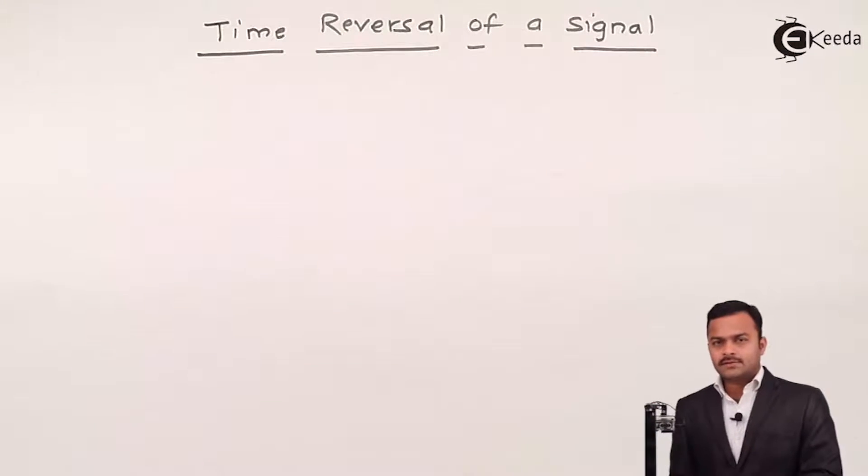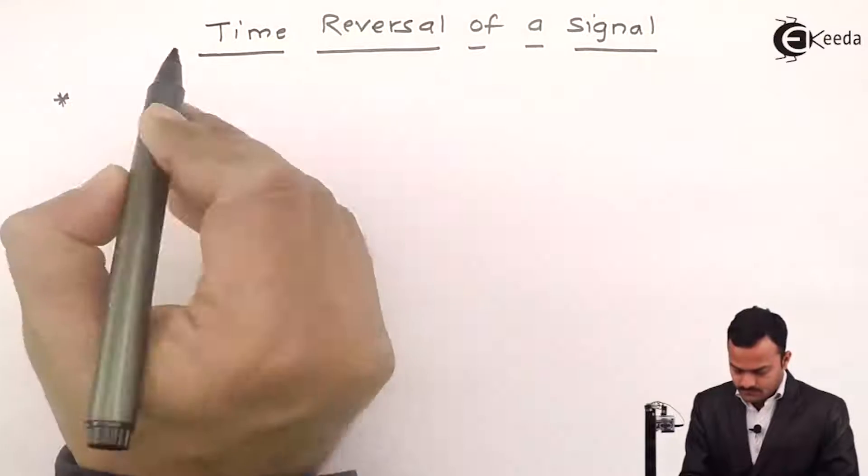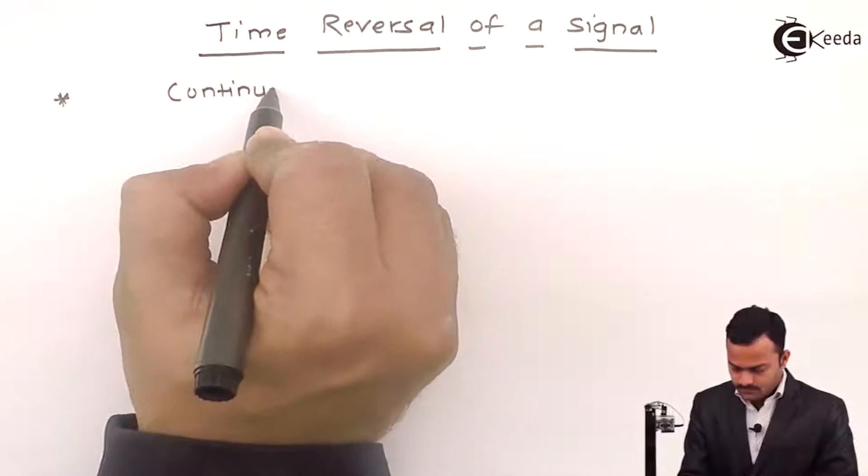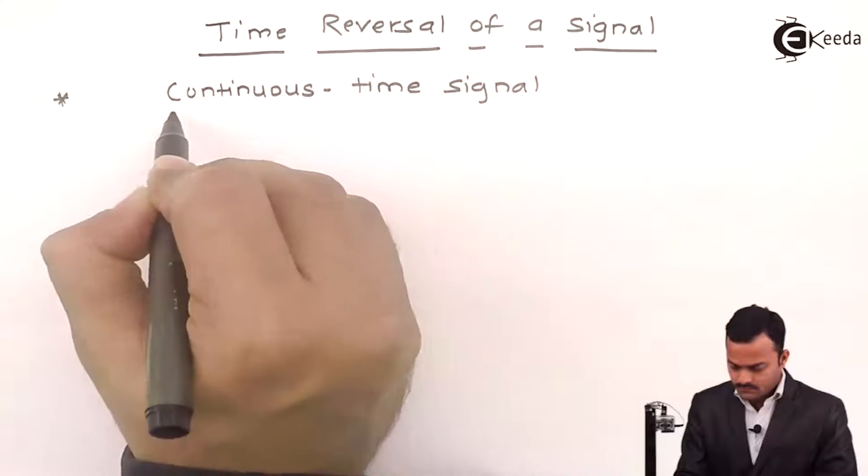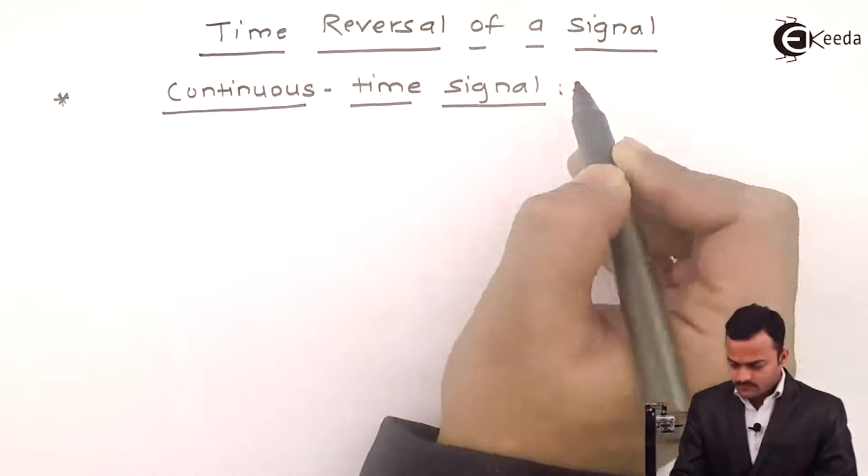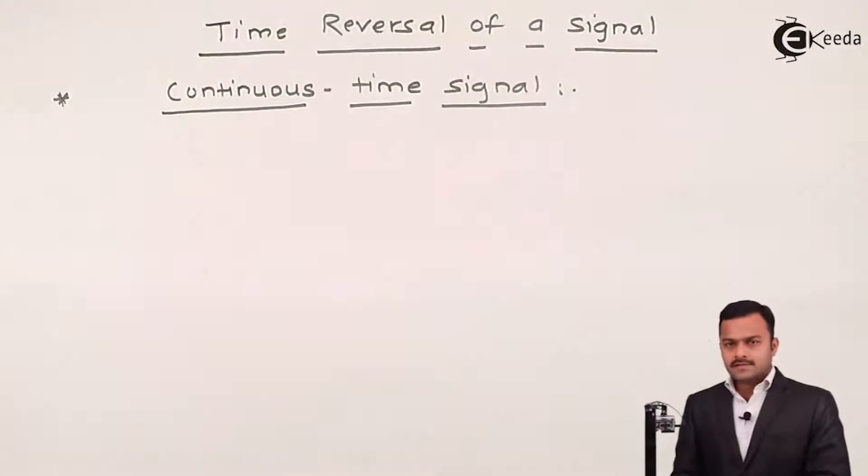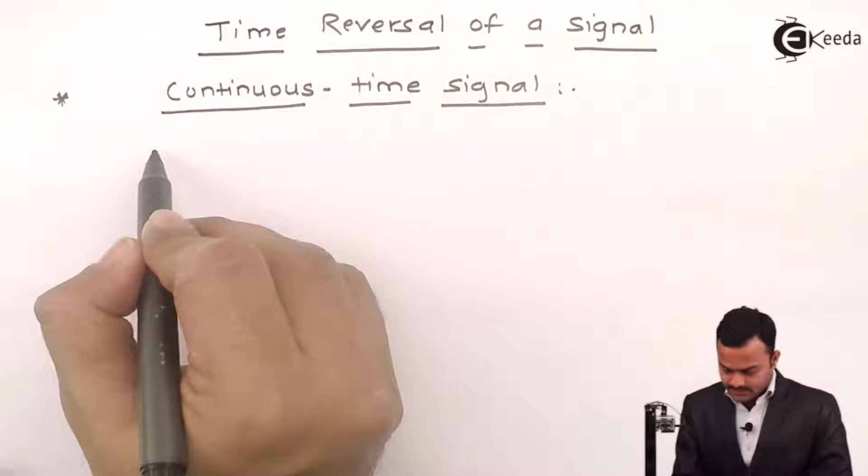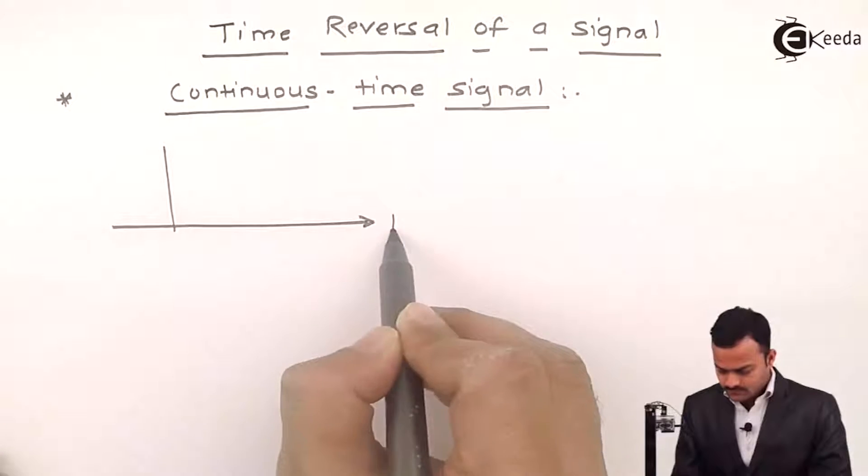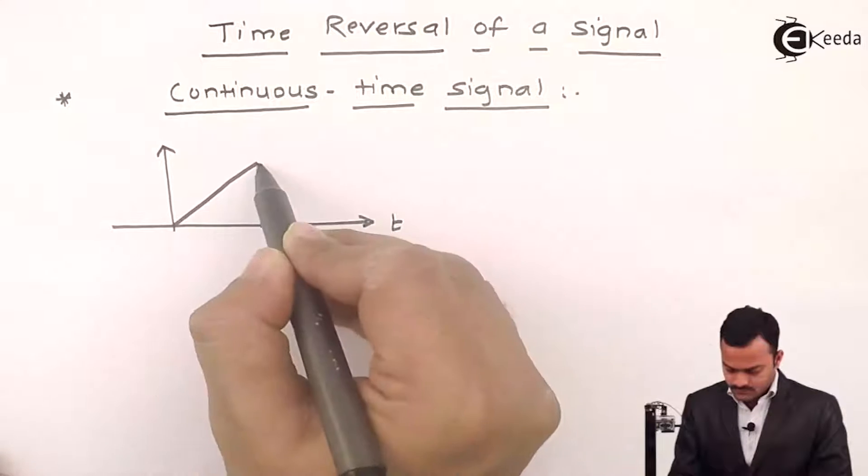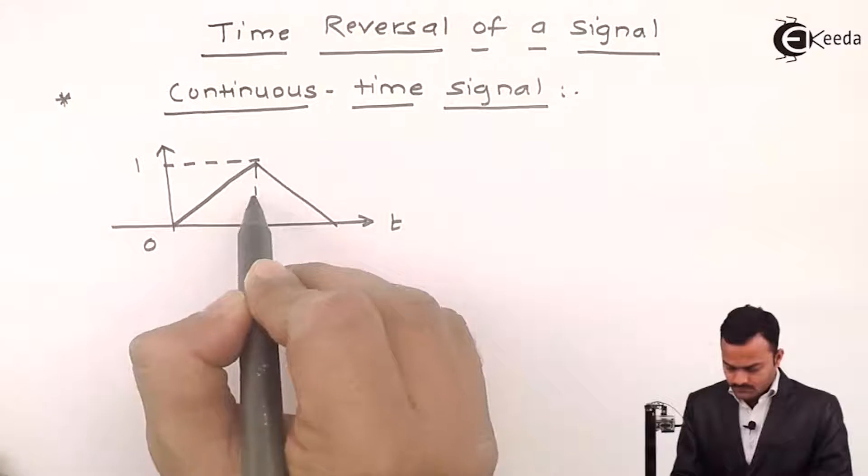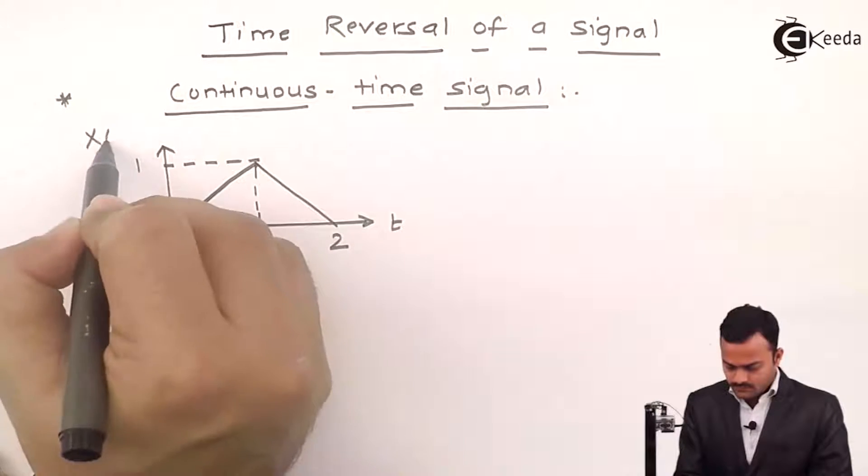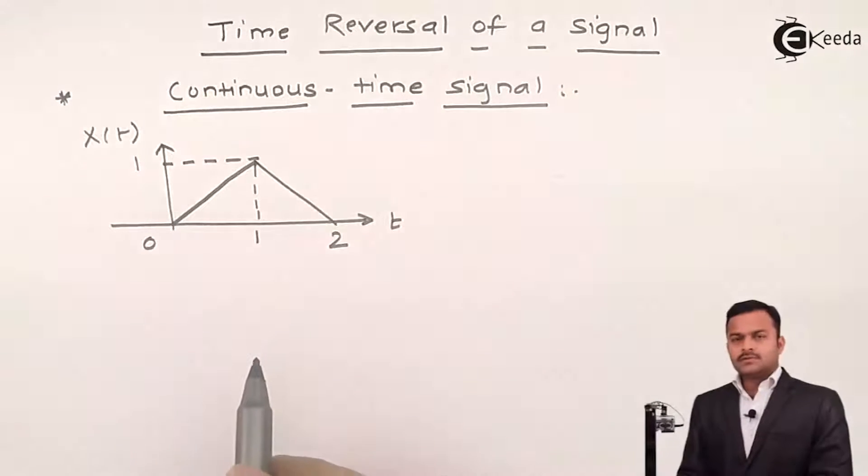Let's consider a continuous-time signal, which is represented by this. So, this is the original signal.